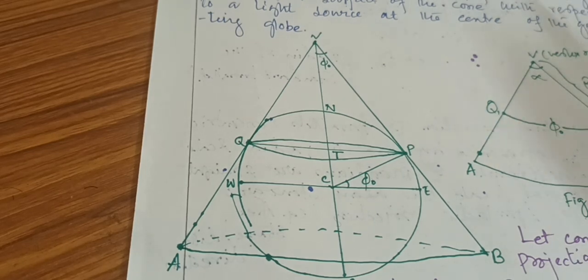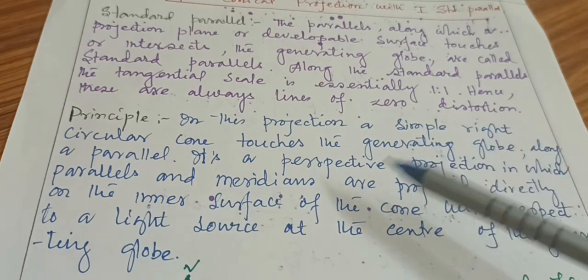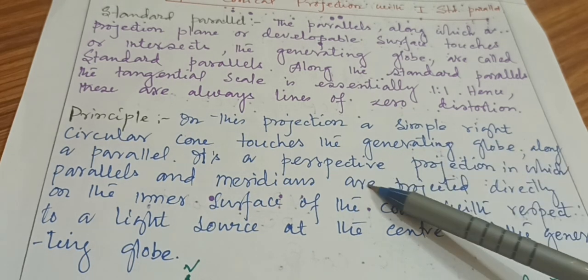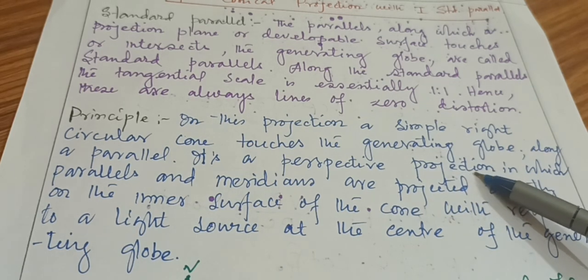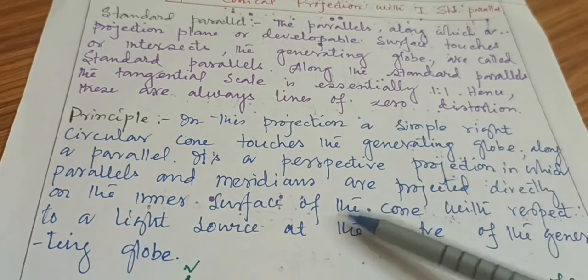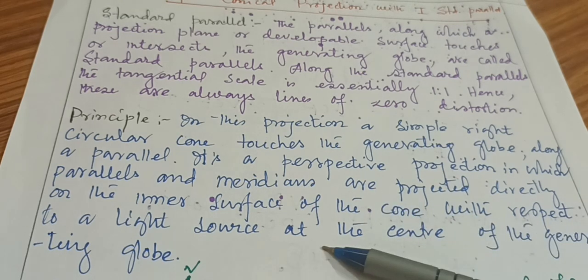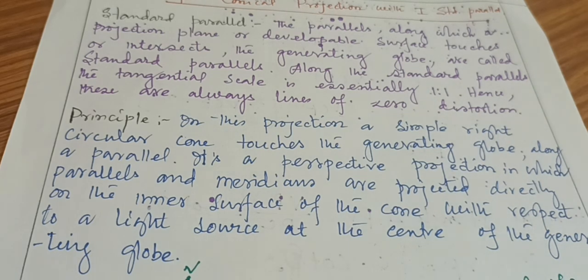Now let us go deeper into the principles of simple conical projection. In this projection, a simple right circular cone touches the generating globe along a parallel. It is a perspective projection because there is a source of light at the center of the generating globe through which the parallels and meridians are projected directly onto the inner surface of the cone.